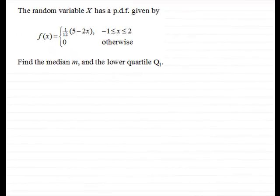Hi, welcome to this worked example on finding the median and lower quartile of a continuous random variable. In this example we're given a random variable X has a probability density function given by f(x) equals one twelfth multiplied by (5 - 2x) where x is greater than or equal to minus one and less than or equal to two, or zero otherwise.